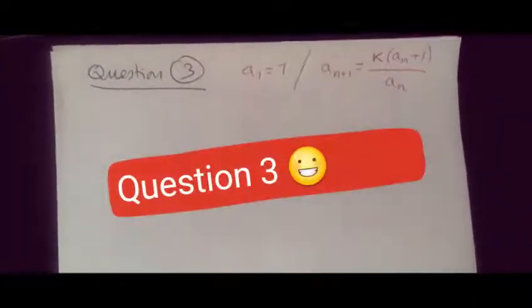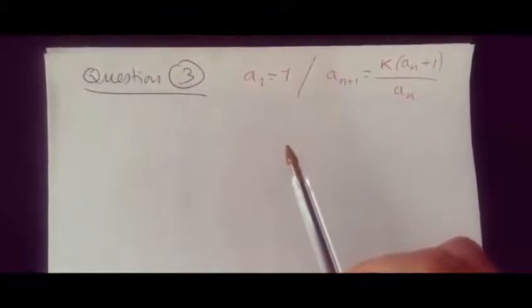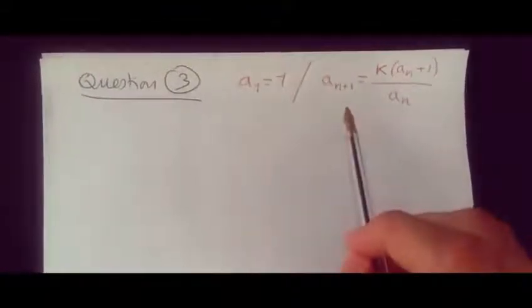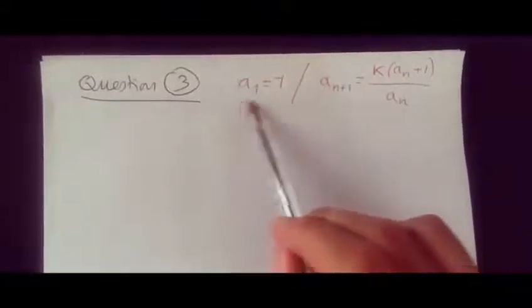That is number 3. So how do we do this one? This is just a simple case of a recurrence relationship, so this is sequences and series. Here they told you that a1 equals 1, and then you're given the relationship for a(n+1) in terms of an.